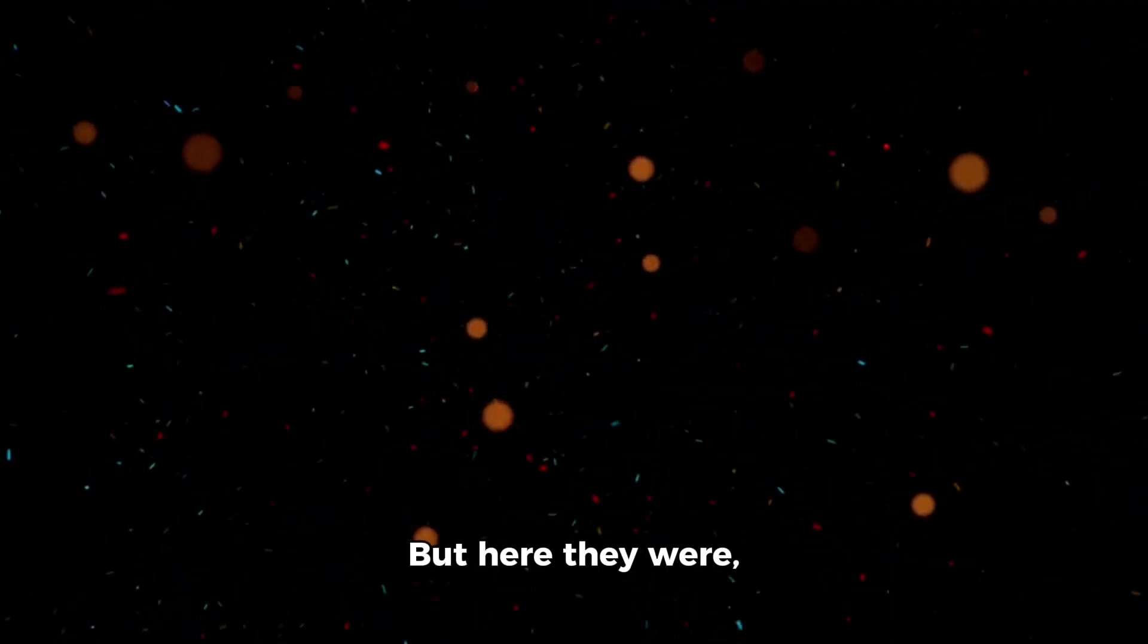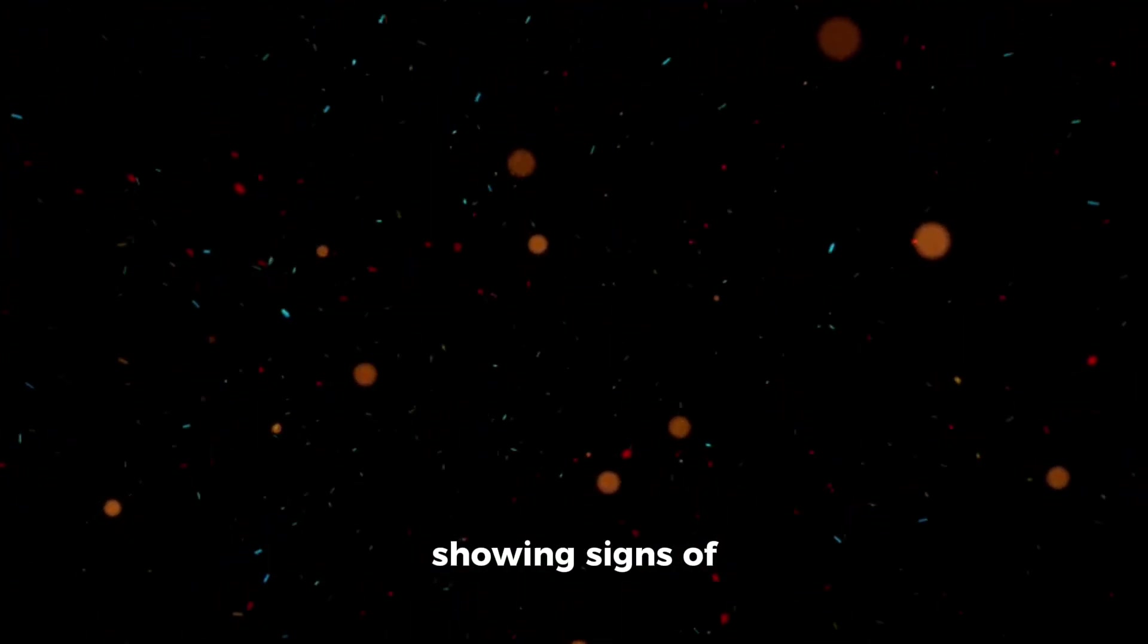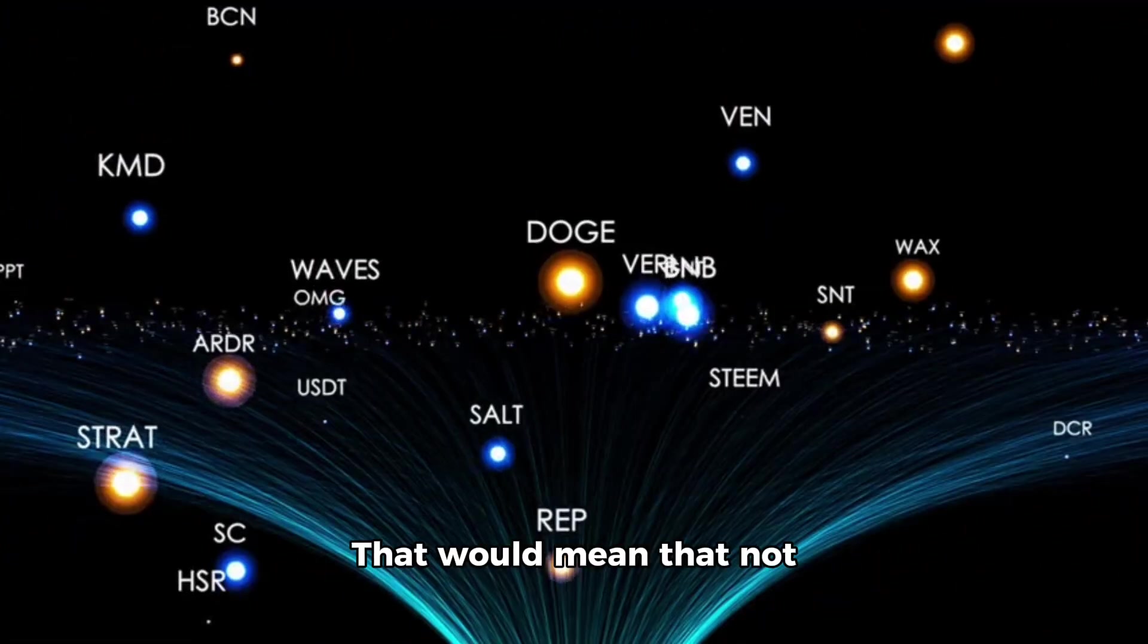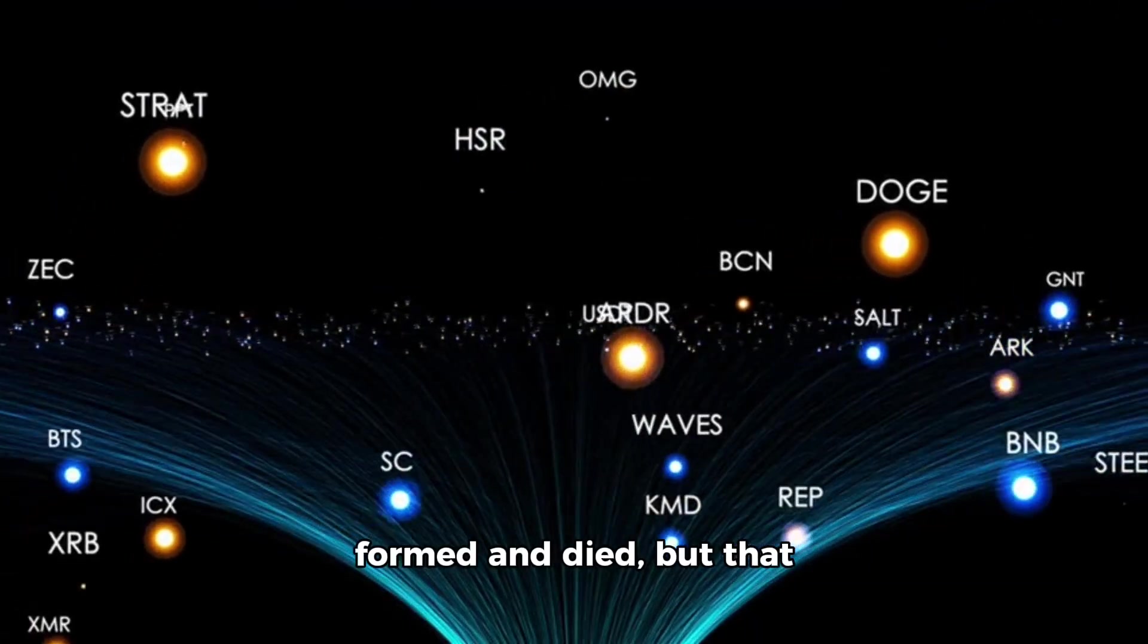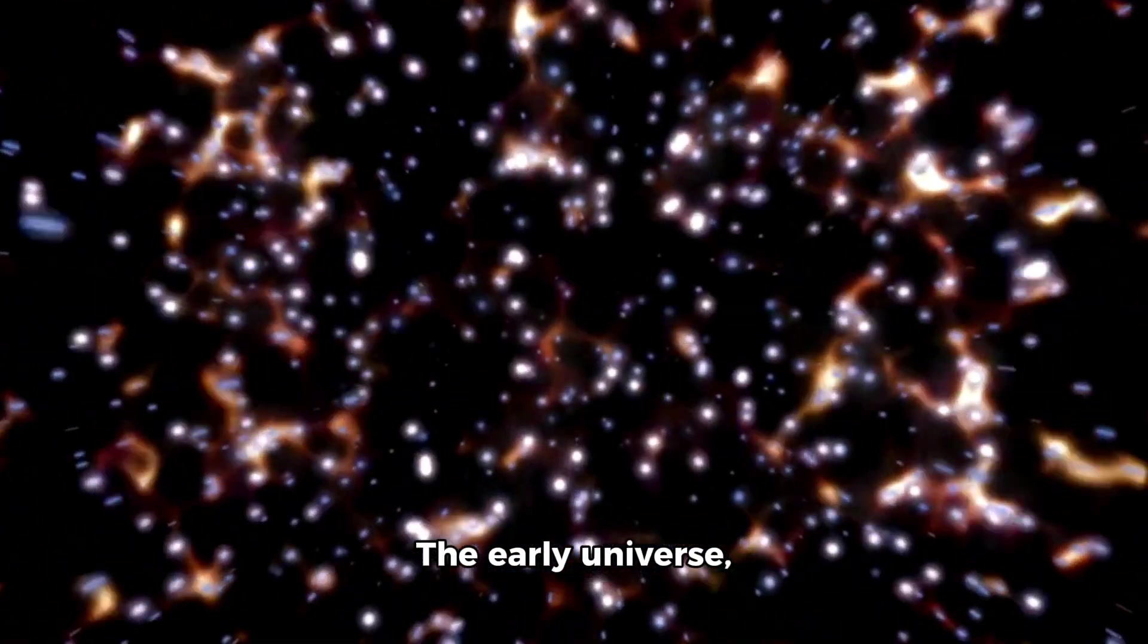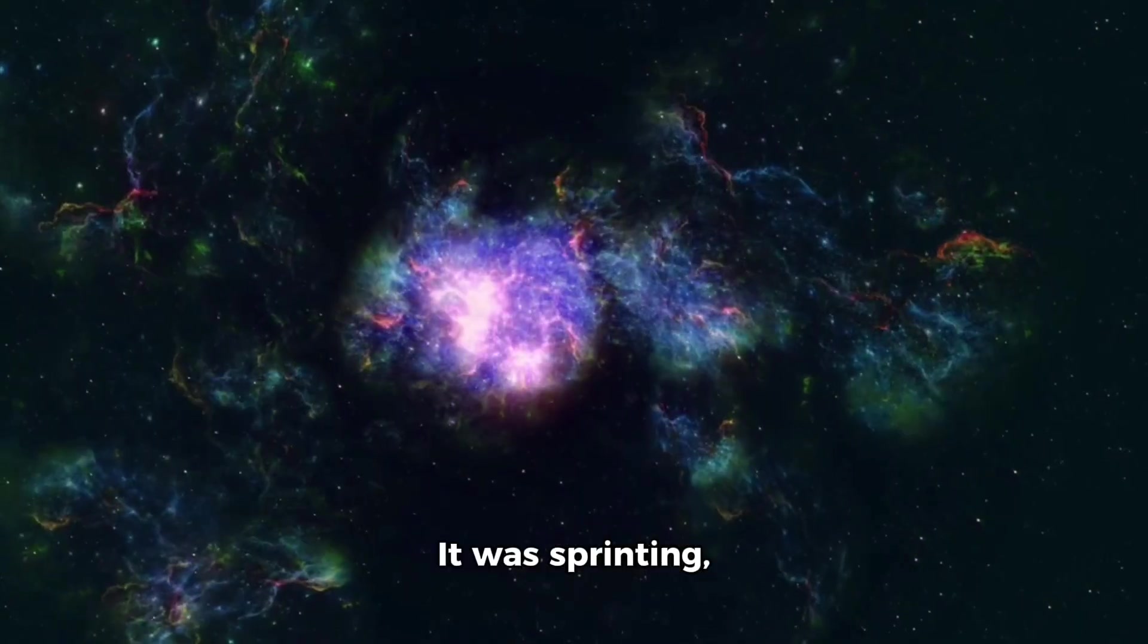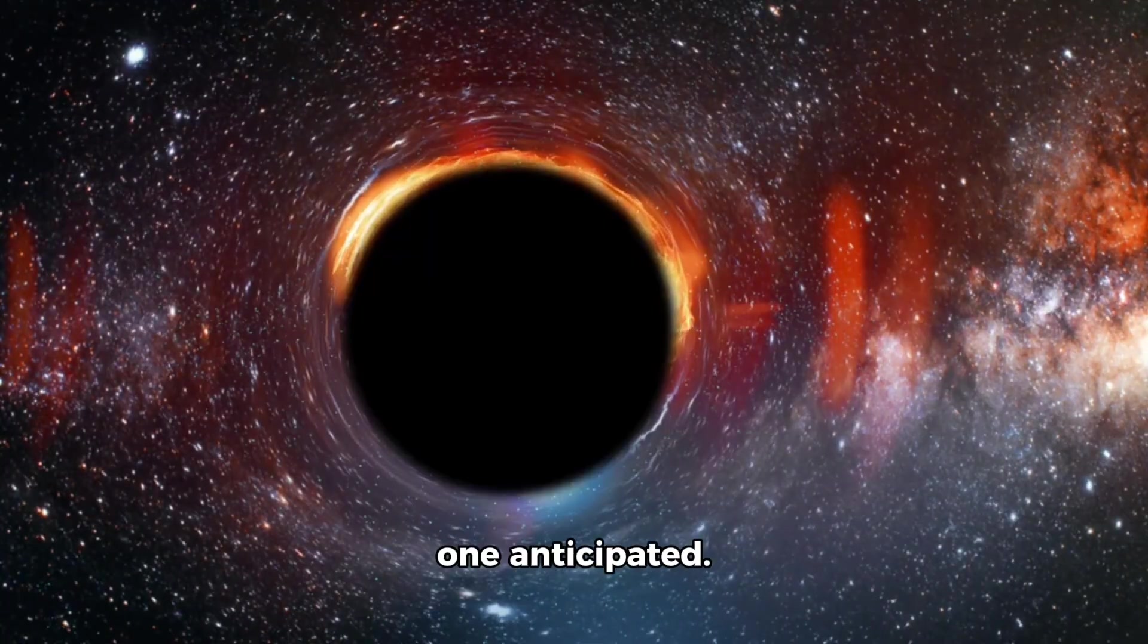But here they were, galaxies less than 400 million years old, showing signs of multiple generations of stellar death and rebirth. That would mean that not only had the first stars formed and died, but that the cycle had already repeated more than once. The early universe, it seems, wasn't quietly waking up. It was sprinting, forging, burning, and exploding in ways no one anticipated.